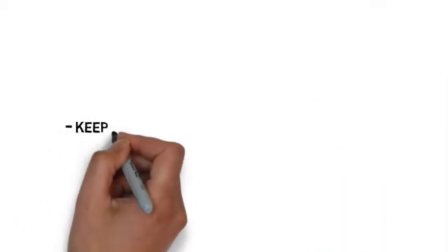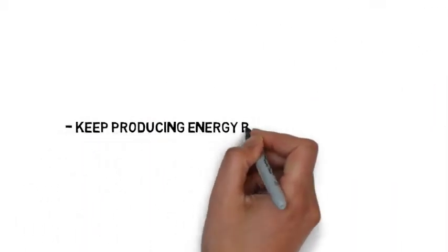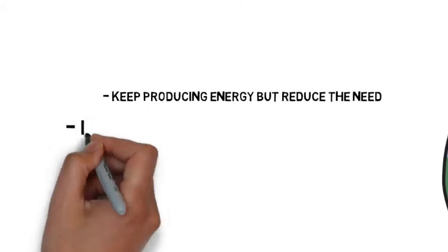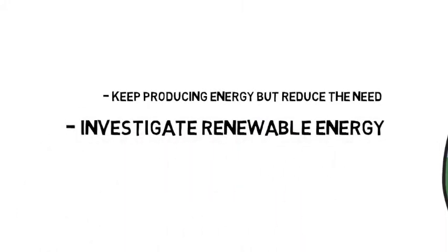So they wrote a list. Keep producing energy to satisfy the needs of everyone while reducing the need. How do we do this? Maybe producing products that need less energy. We'll work on that. Next, investigate renewable energy. We'll look into it.